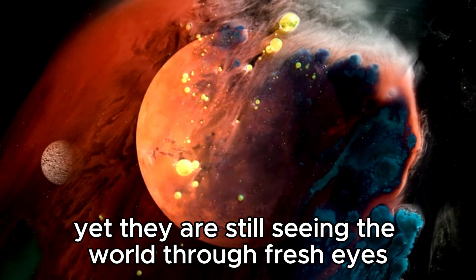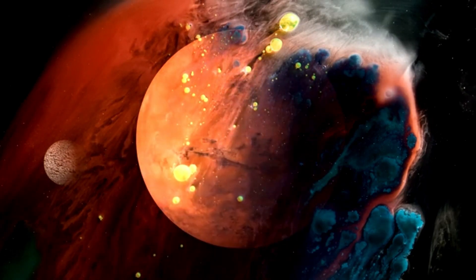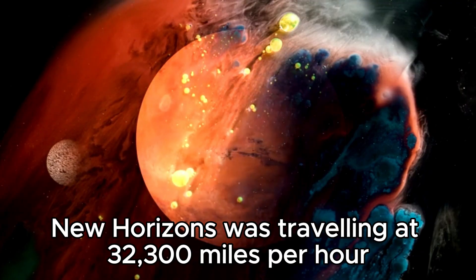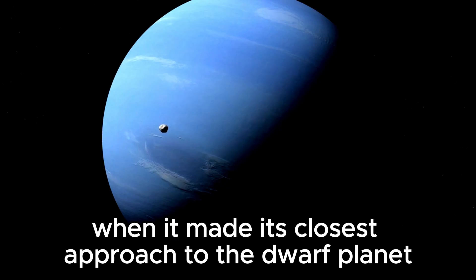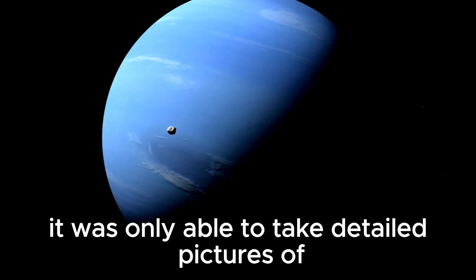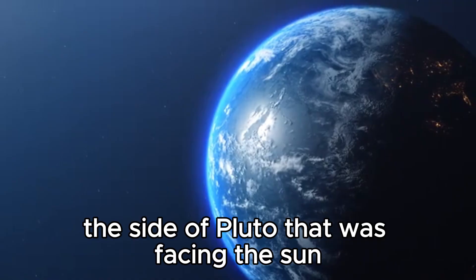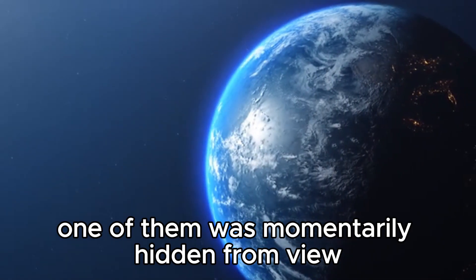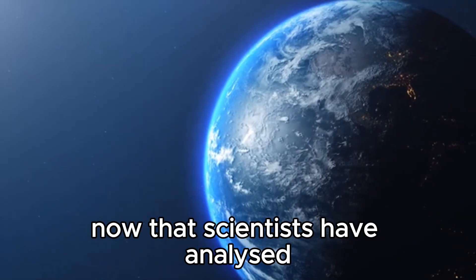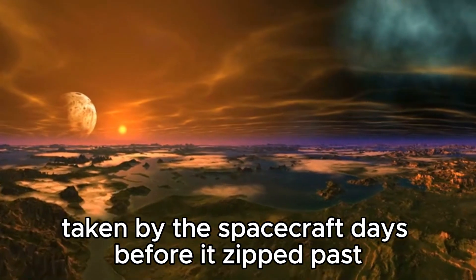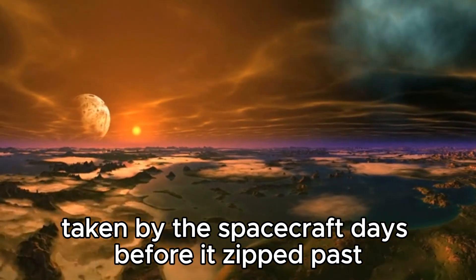Yet they are still seeing the world through fresh eyes. Since New Horizons was traveling at 32,300 miles per hour when it made its closest approach to the dwarf planet, it was only able to take detailed pictures of the side of Pluto that was facing the Sun. One of them was momentarily hidden from view by the darkness.